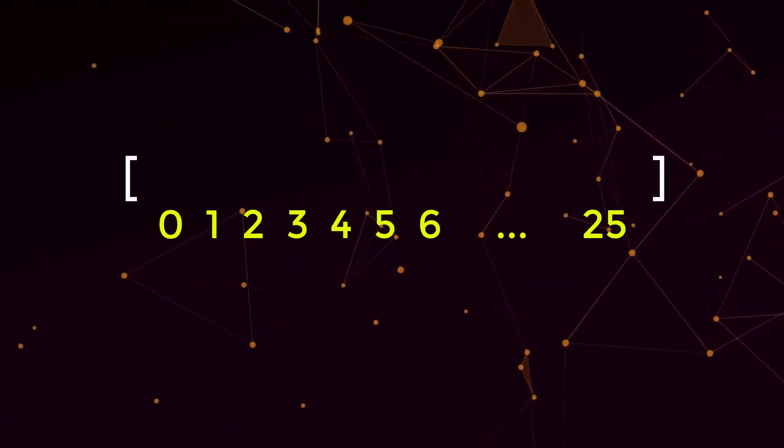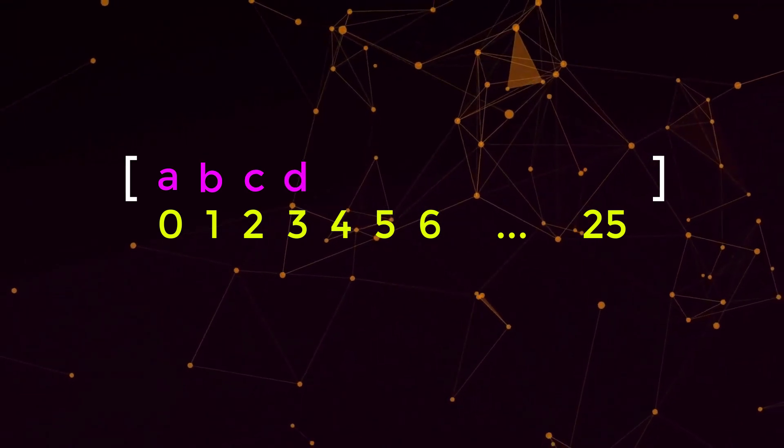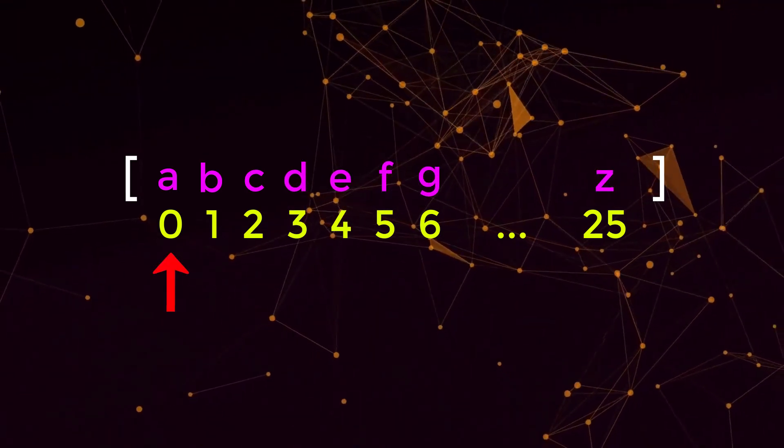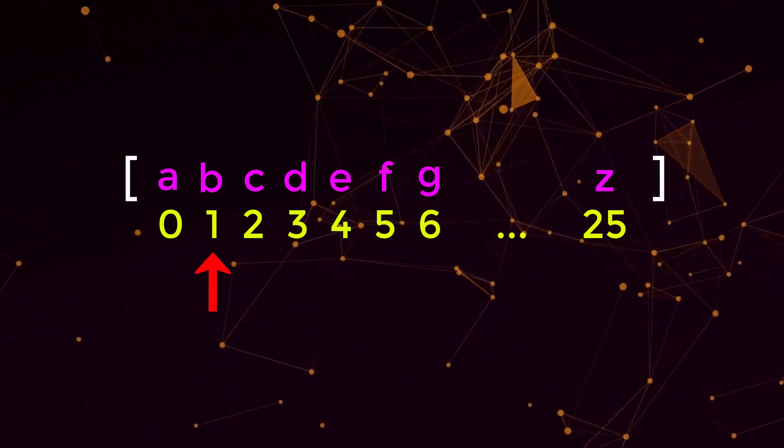So this is really helpful for us because now we know the whole range of characters that could be present in our input. So with this integer array of size 26, each index is going to point to a specific lowercase letter. So for example, lowercase a will look at index zero, lowercase b will look at index one, and so on.